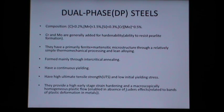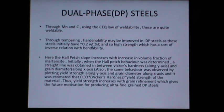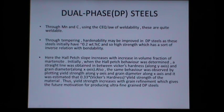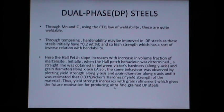DP steels show continuous yielding, high ultimate tensile strength (UTS), and low initial yield strength. They provide high early-stage strain hardening and macroscopically homogeneous plastic flow, enabled by the absence of Lüders effects related to bands of plastic deformation. Using the carbon equivalent (Ceq) law of weldability with manganese and carbon, these steels are quite weldable. The Hall-Petch slope increases with volume fraction of martensite, and 0.33 times Vickers hardness is approximately equal to yield strength.